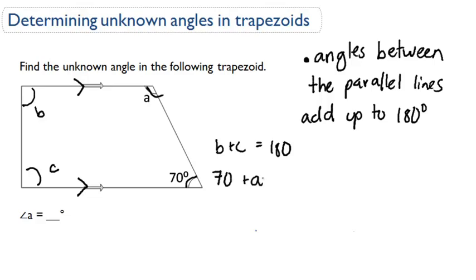So 70 plus A is equal to 180. So if we subtract both sides by 70, we're left with A equaling 110 degrees.